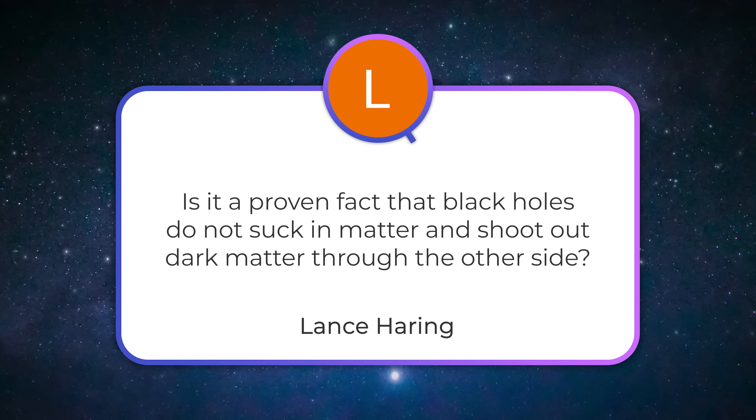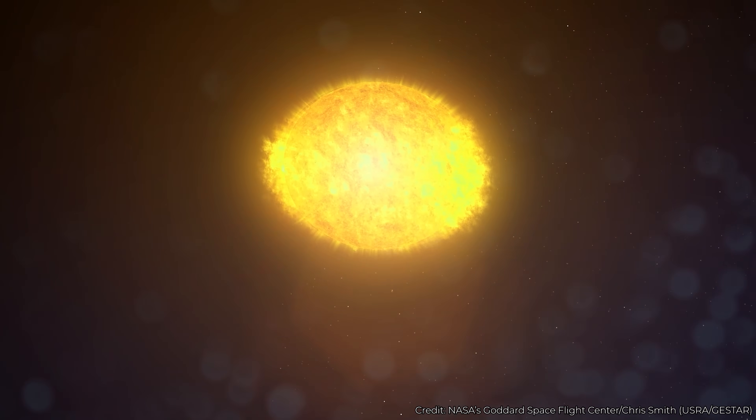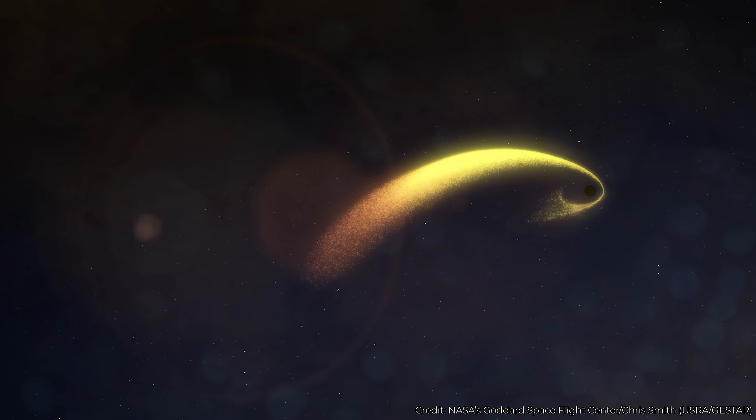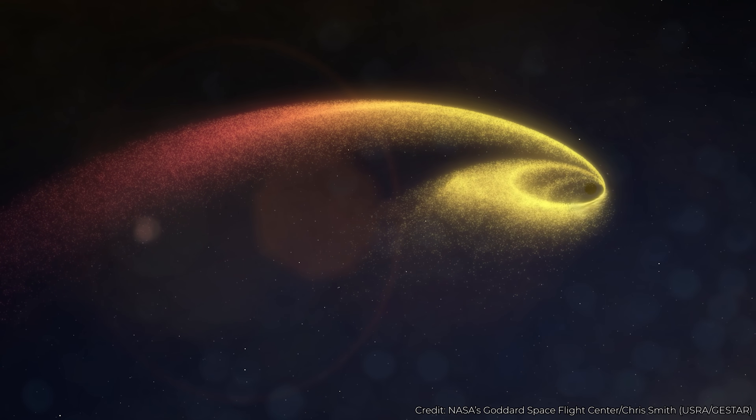Lance Herring asks: is it a proven fact that black holes do not suck in matter and shoot out dark matter through the other side? The problem is that there isn't another side. A black hole is a sphere — the event horizon of a black hole is a sphere. Instead of it being a hole in the ground where you throw stuff in, a black hole's gravity is more like the gravity of planet Earth going in three dimensions. There is no exhaust port on a black hole, no other side. If you go into the event horizon of a black hole, you get added to the mass of the black hole. Hawking has calculated that black holes will evaporate over long periods of time, but it's definitely not a source of dark matter coming from them.